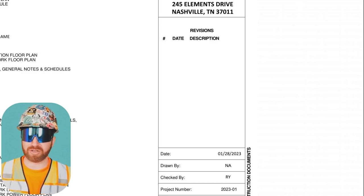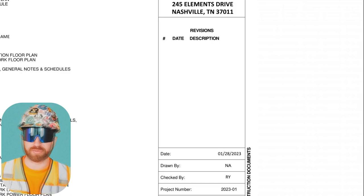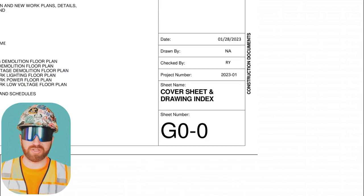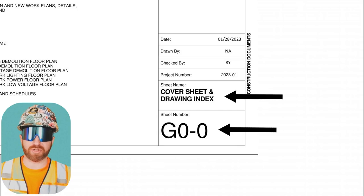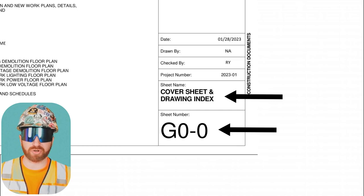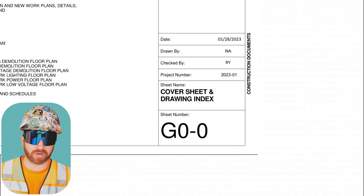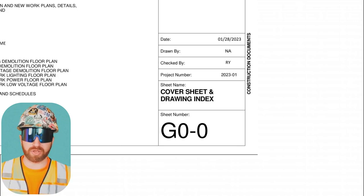The revisions block states if there was an update to a specific page and will usually provide a date associated with that change. These can be in the form of addendums or construction bulletins. Finally, bottom right on this page you'll see the sheet number and sheet name — key when trying to reference information or communicate with someone about where they're looking, whether over the phone or via email.